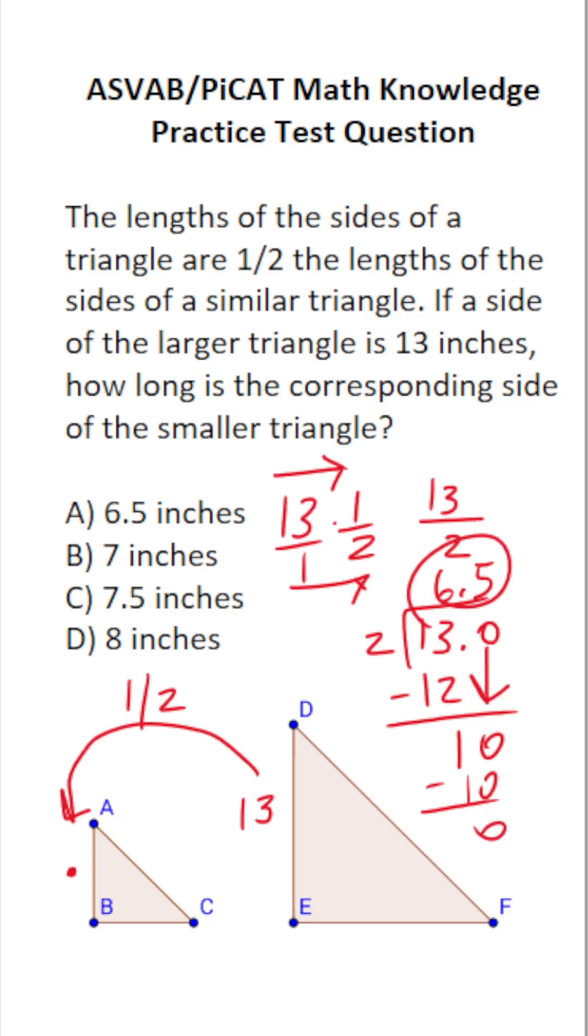So in other words, this corresponding side of the smaller triangle has a length of 6.5 inches, which is going to be A.